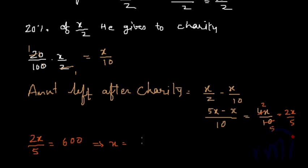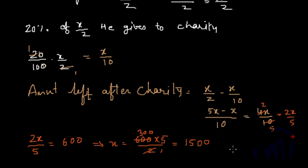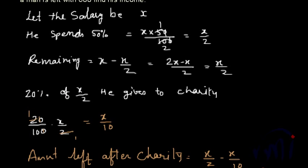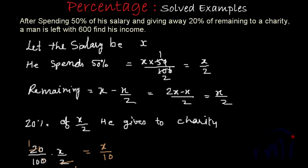This 2x by 5, which is left even after giving to charity, is equal to 600. From here we get x equal to 600 multiplied by 5 divided by 2, which equals 1500. So x is equal to 1500, and since x is the salary we assumed, this is the salary. We got 1500 using our first method, which is the traditional step-by-step method.